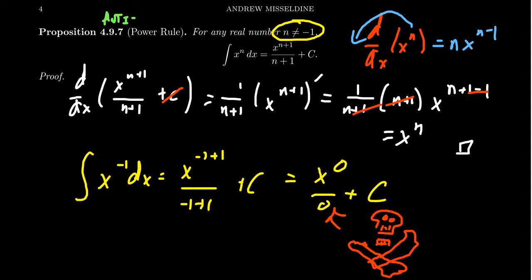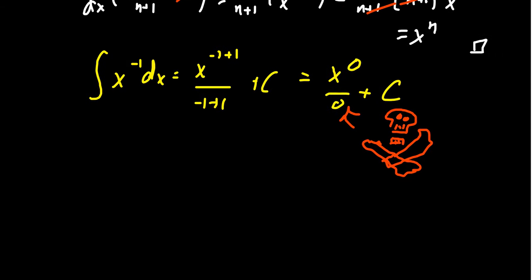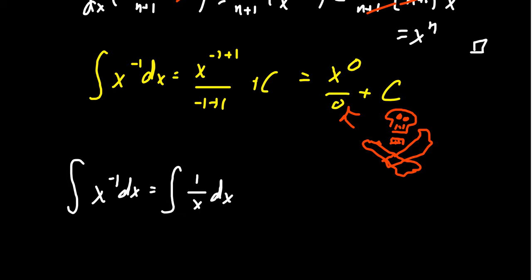We don't want to divide by zero, so the n equals negative one case must be handled differently. For the integral of one over x dx — which is x to the negative one — I recommend thinking of it as the function one over x. We need to find a function whose derivative is one over x, and we actually know that function: it's the natural log of x plus a constant.